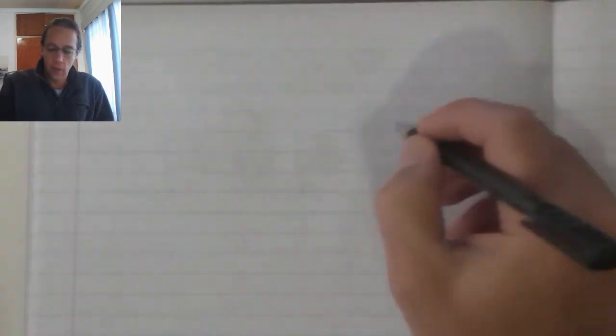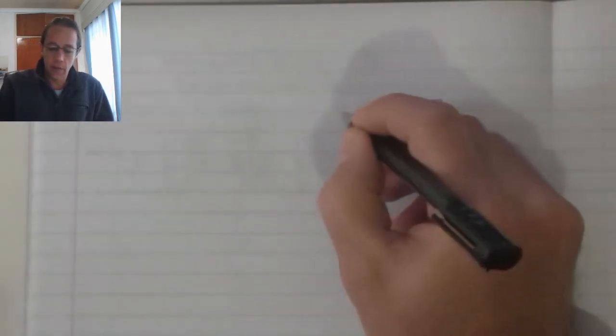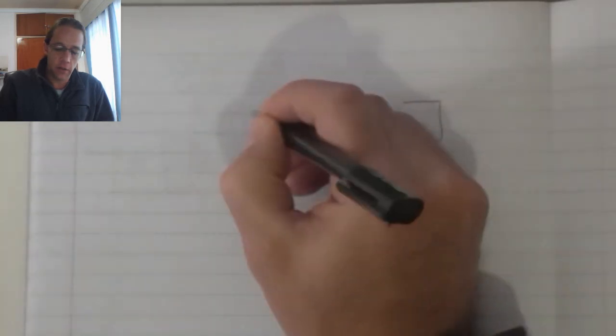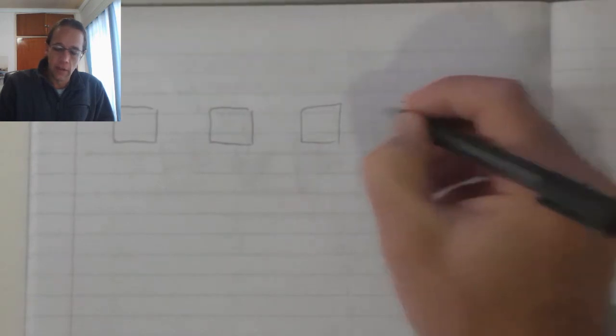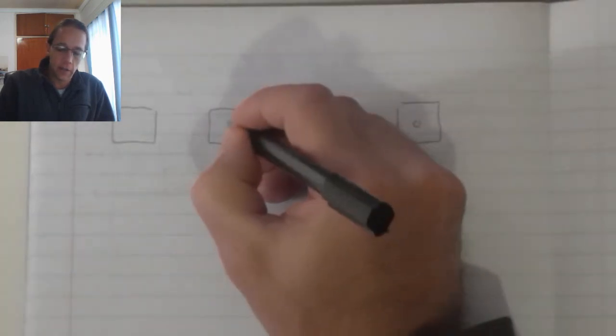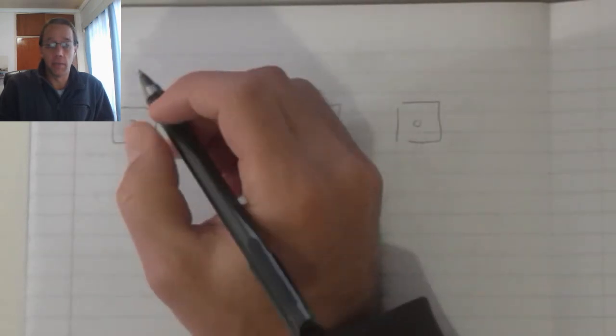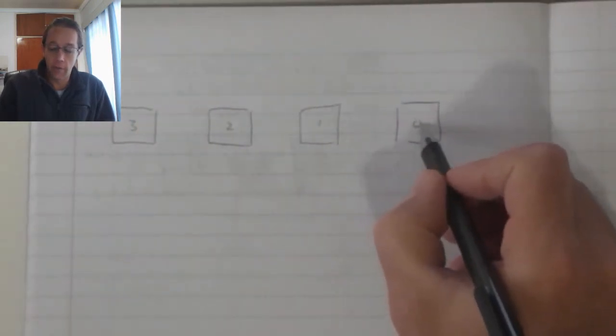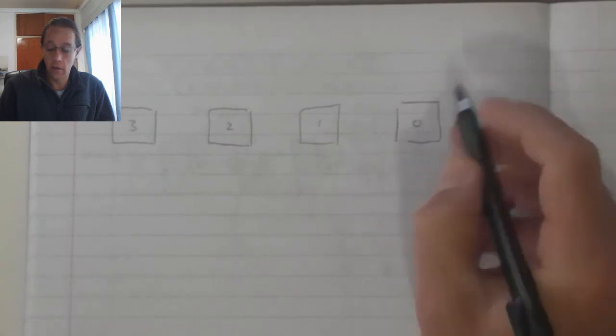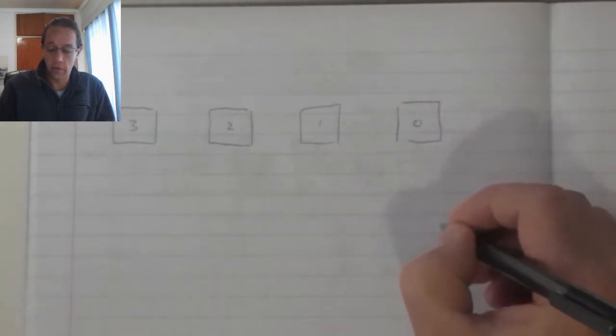Now what we've seen with the counters at this stage is that each flip-flop, whether it's a D-type or a JK flip-flop, will indicate a specific bit in a sequence. So the first flip-flop we label 0 because it changes after every 2 to the power 0 pulses.